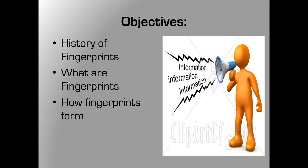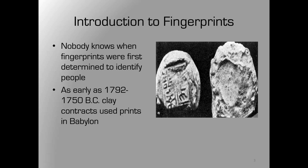If we're going to start, we should start at the beginning. There's not necessarily a set date recorded in history for when fingerprints were first determined to be unique identifiers, but it's thought to have been understood for an awfully long time. Here we're looking at an old Babylonian clay tablet that was apparently an agreement between a landowner and a farmer, dated at almost 2000 BC.